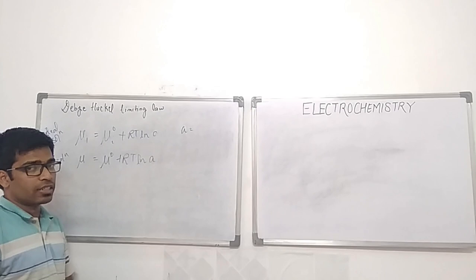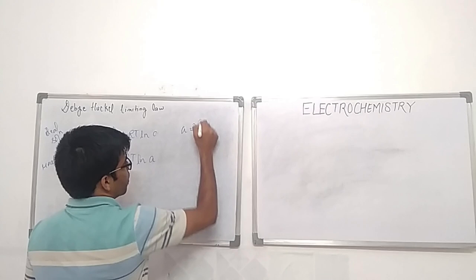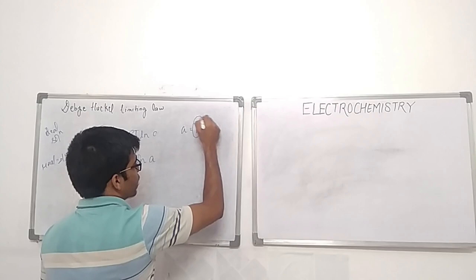In real solutions, the effective concentration is different from the concentration expected in an ideal solution, because of the interactions between molecules. This is represented as γ times C, where C is the concentration and γ is the activity coefficient, which accounts for the deviation.